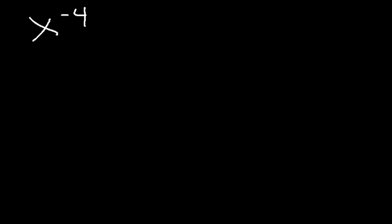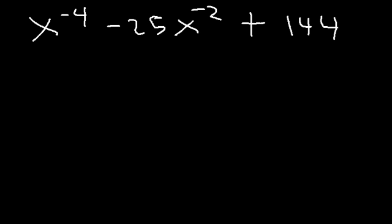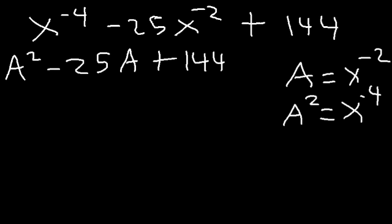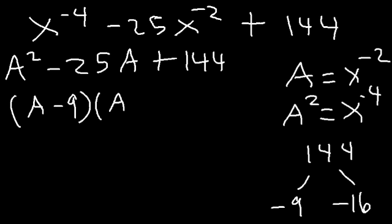Try this practice problem: x to the negative 4 minus 25x to the negative 2 plus 144. Factor this expression completely. Let a equal x to the negative 2, so a squared equals x to the negative 4. This gives a squared minus 25a plus 144. What two numbers multiply to 144 but add to negative 25? That's negative 9 and negative 16, since 9 times 16 is 144 and negative 9 plus negative 16 is negative 25. So we get a minus 9 times a minus 16. Replace a with x to the negative 2.